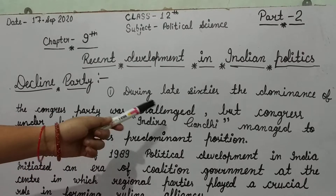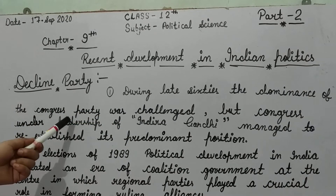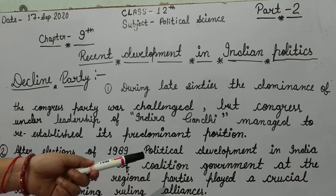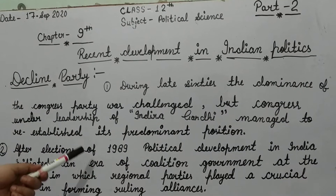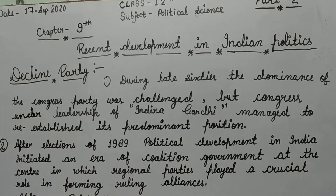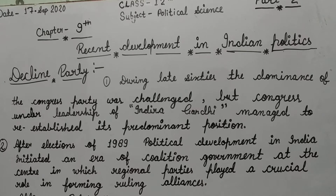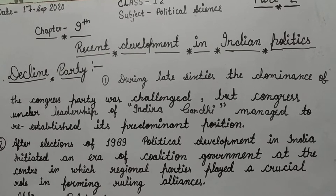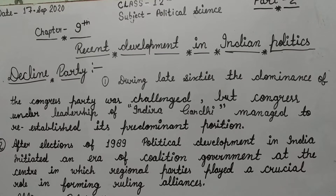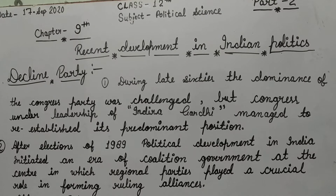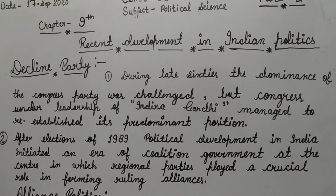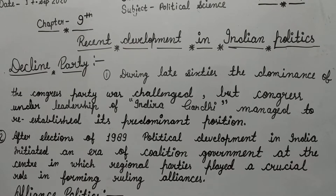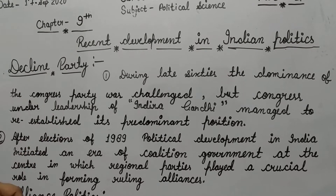Our first point: during the late 60s, the dominance of the Congress party was challenged. But Congress, under the leadership of Indira Gandhi, managed to re-establish its predominant position. As we saw in previous chapters, in the 1960s the dominance of the Congress party was challenged, but after Indira Gandhi assumed leadership, the dominance of the Congress party was re-established.